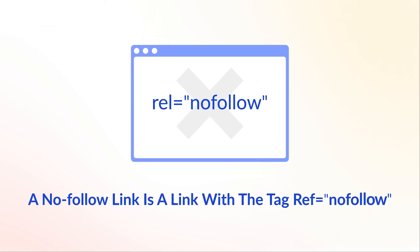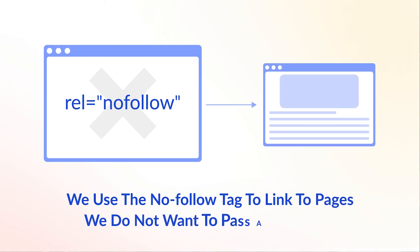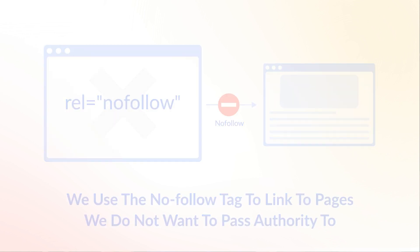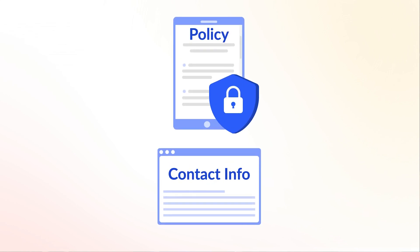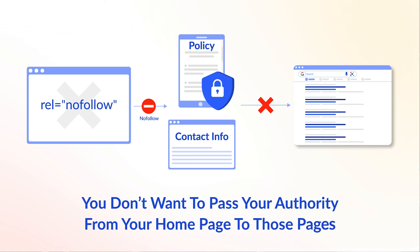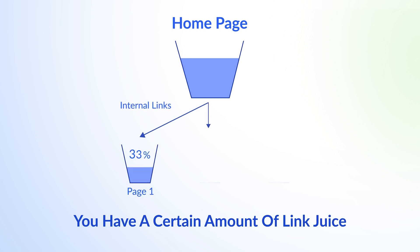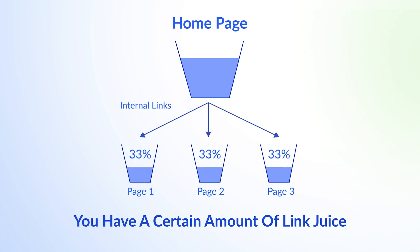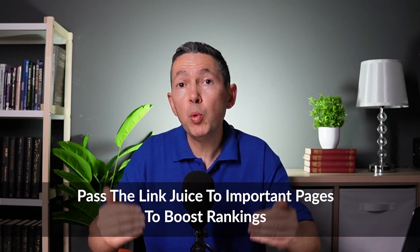A nofollow link is a link with the tag rel='nofollow'. We use the nofollow tag to link to pages we do not want to pass authority to. For example, you need to link to your privacy policy and contact page so users can find them, but you don't want to rank those pages. In SEO speak, we refer to passing authority as link juice. You have a certain amount of link juice, and the more pages you share it with, the less there is to go around. So you want to pass link juice to important pages to boost their rankings and avoid passing it to non-SEO pages. Just know that the nofollow tag is not a solution to link spamming — if your pages have too many unrelated links that don't make sense, your page will look spammy even with the nofollow tag.